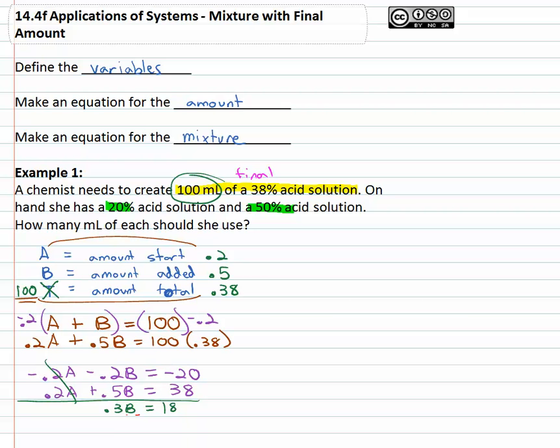Divide by point three and we'll find out that B is equal to eighteen divided by point three or sixty milliliters.